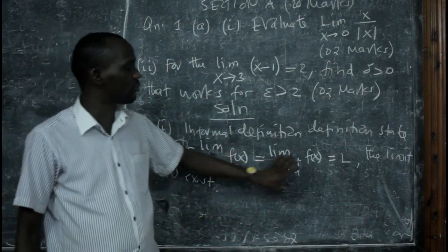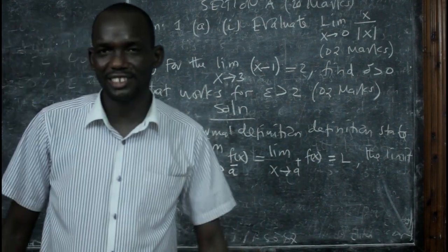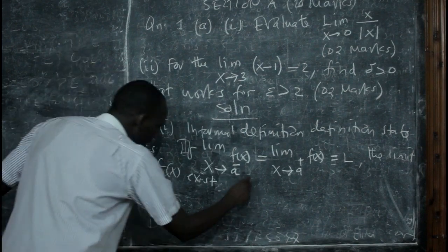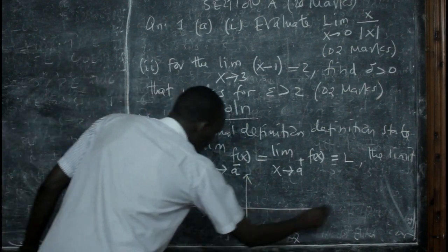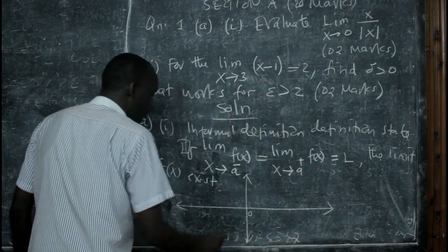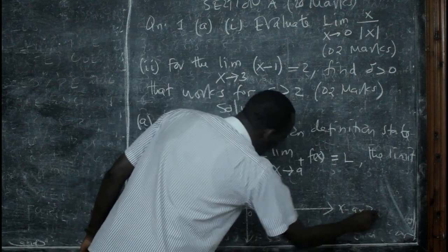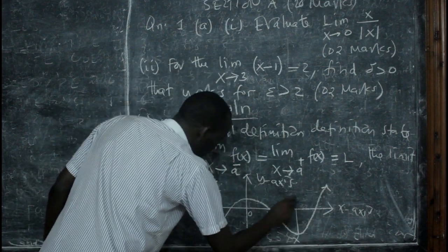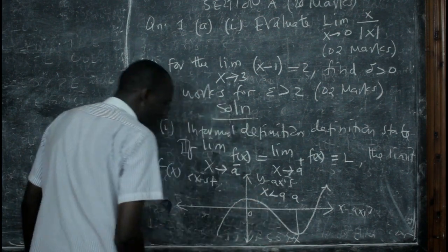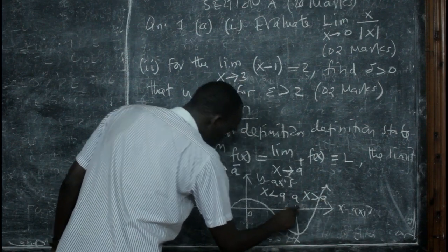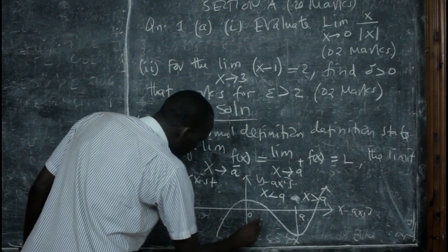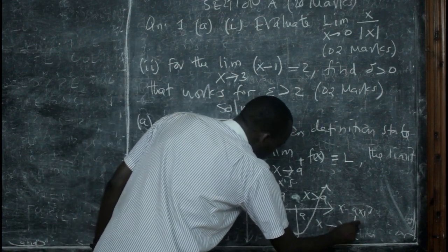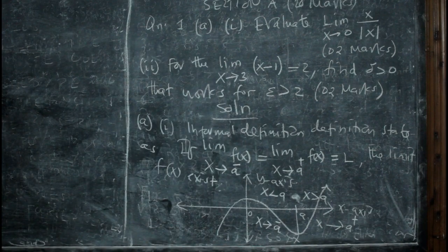Suppose I have a graph with an x-axis and y-axis, and a certain function with a point A. We say that x less than A is the left-hand side, and x greater than A is the right-hand side. Mathematically, we label the left-hand side as x approaches A minus, and the right-hand side as x approaches A positive. That is a concept you have to remember. Now, let us take consideration of the given function.